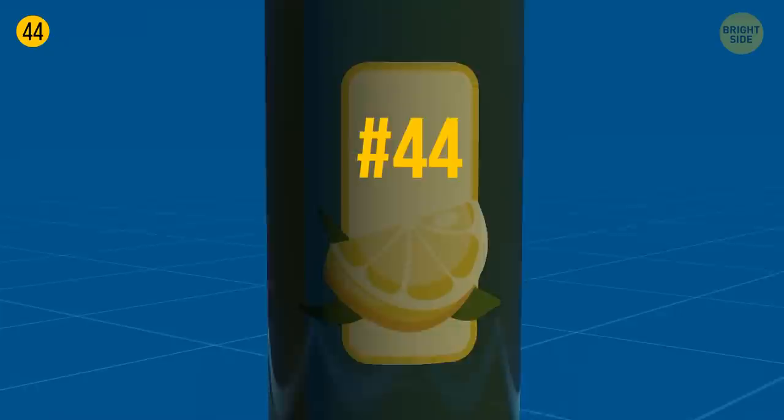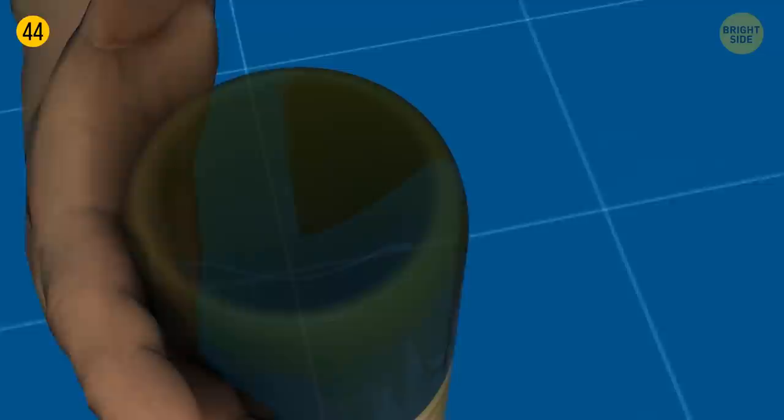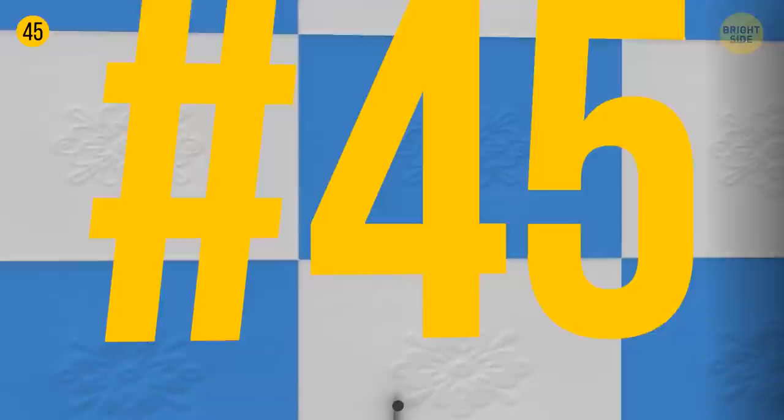Glass bottles usually have a kind of indent on the bottom called a punt. It's handy for those who pour drinks in the glass. The bottle won't slip from the hands like this.